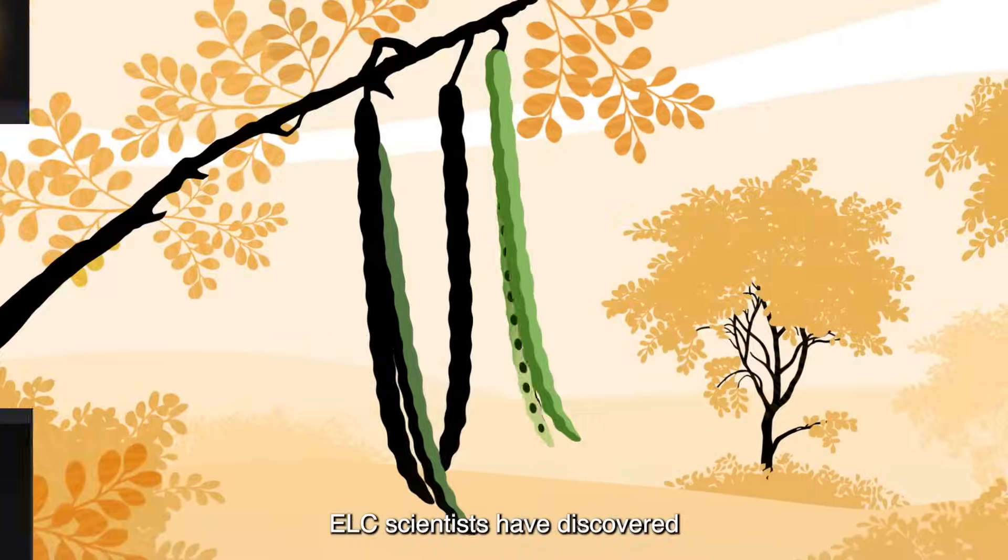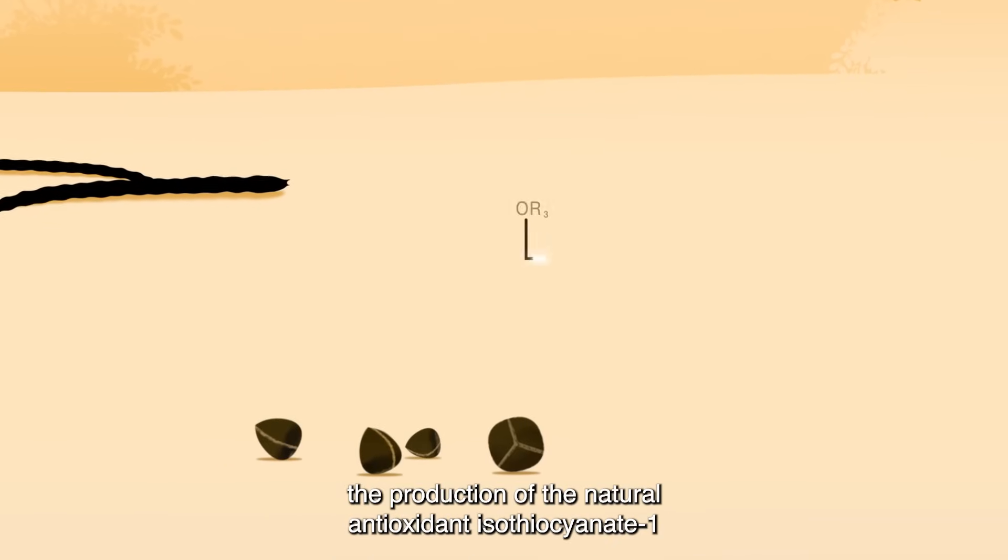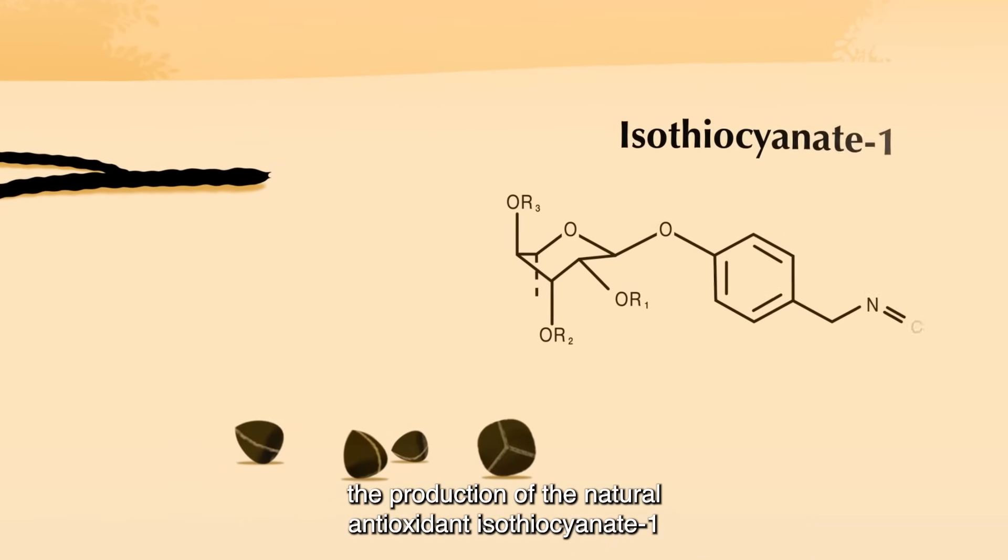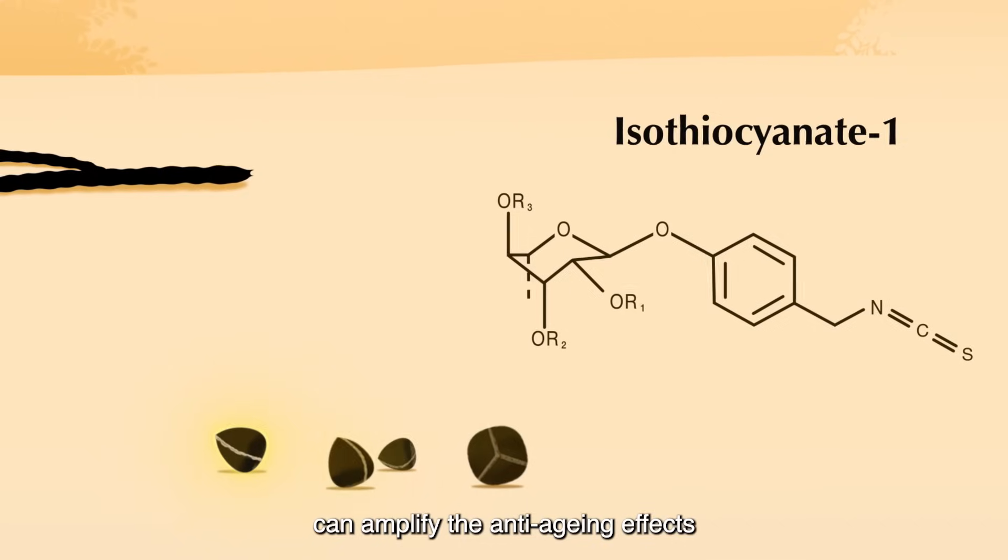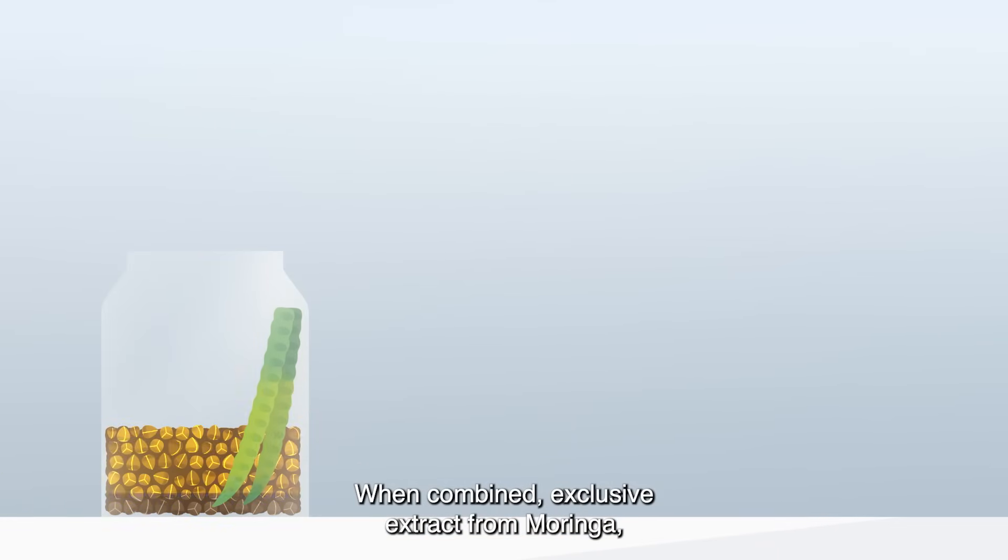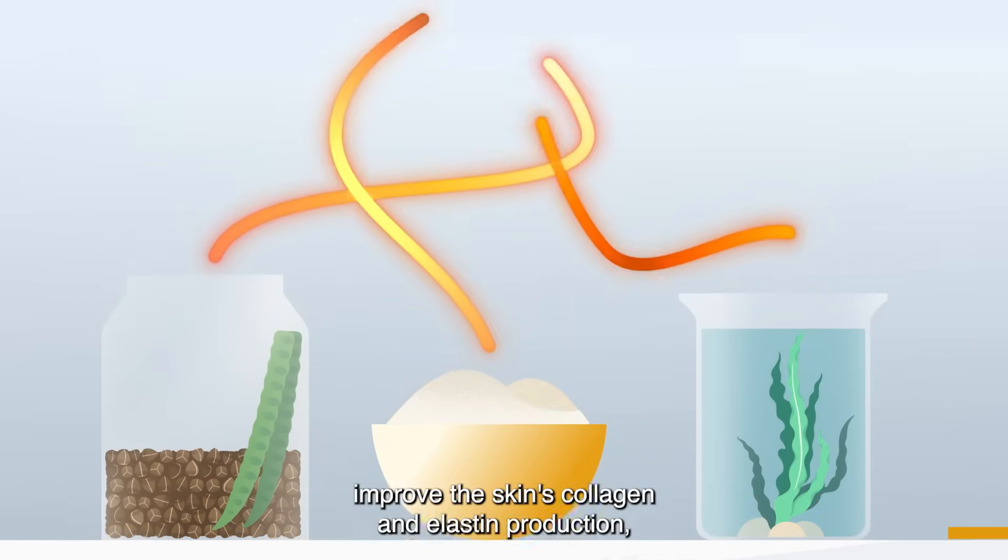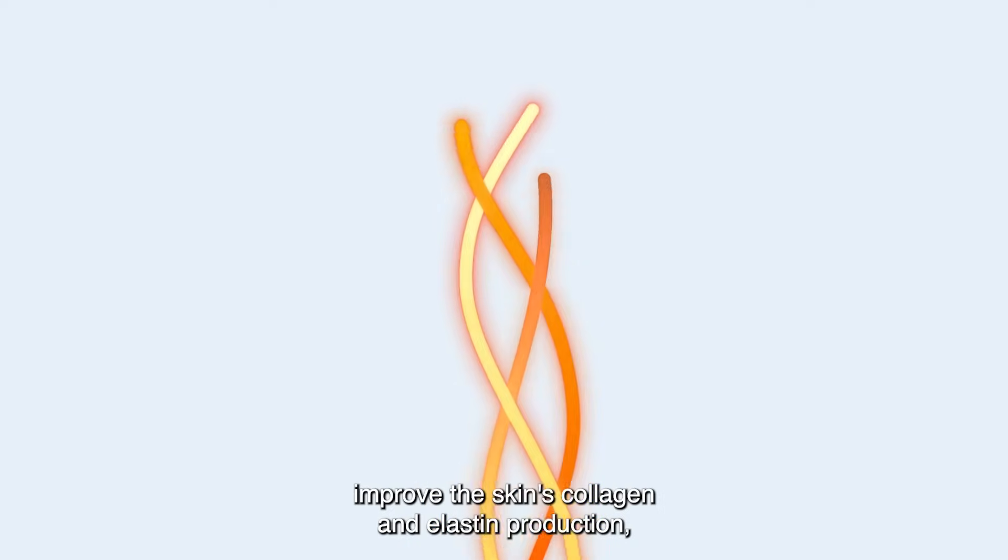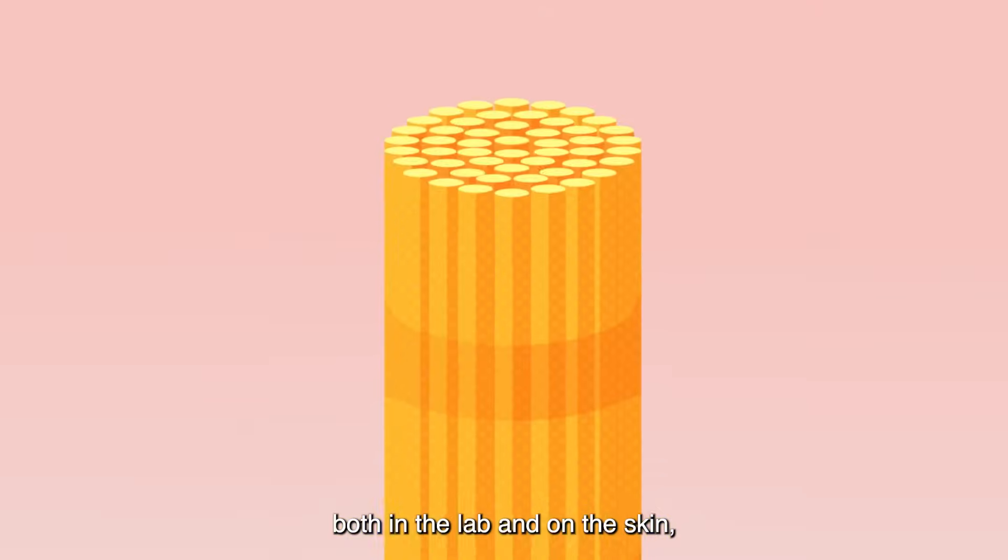ELC scientists have discovered that during the moringa seed cycle, the production of the natural antioxidant isothiocyanate can amplify the anti-aging effects of other natural ingredients. When combined, exclusive extract from moringa and extracts from algae and whey improve the skin's collagen and elastin production, unlocking powerful anti-aging effects both in the lab and on the skin,